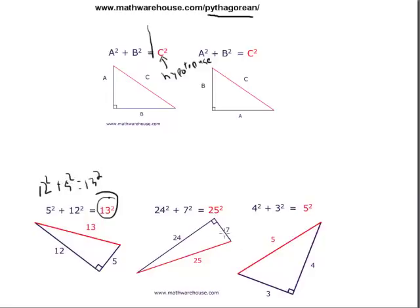Here's the hypotenuse — 25 — opposite the right angle, and that goes all alone on one side of the equation. One more example: 3 squared and 4 squared equals the hypotenuse squared. Before we move on, just remember: one side of the equation is the hypotenuse squared, and the other two sides — whether it's 24 and 7, 5 and 12, or 4 and 3 — go on the alternate side of the equal sign.